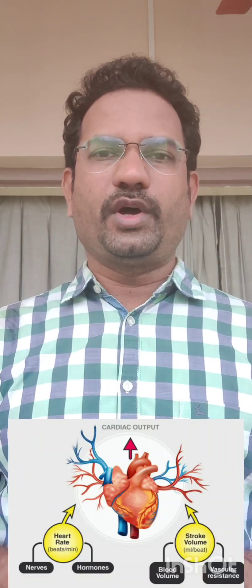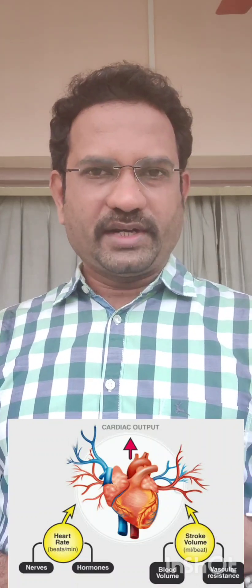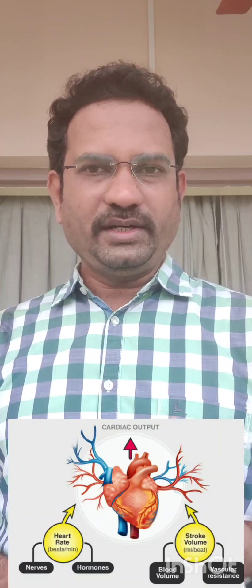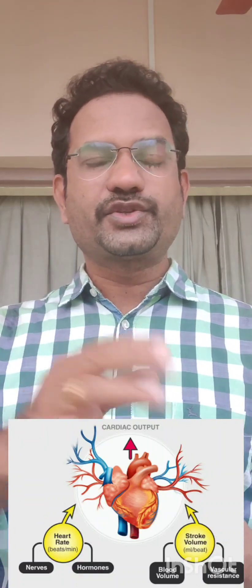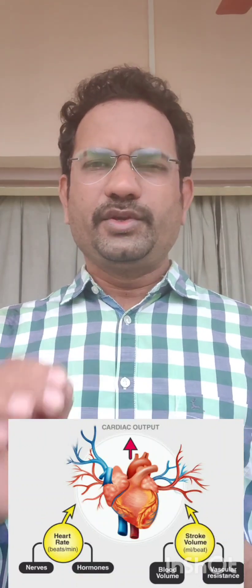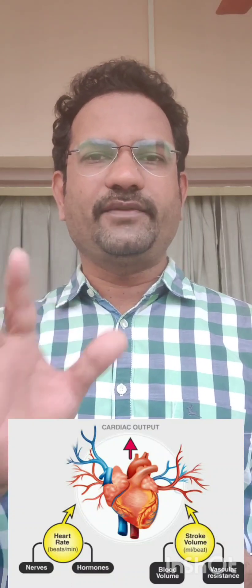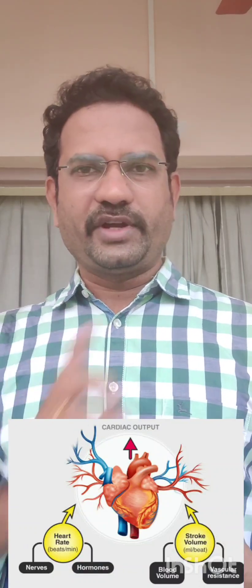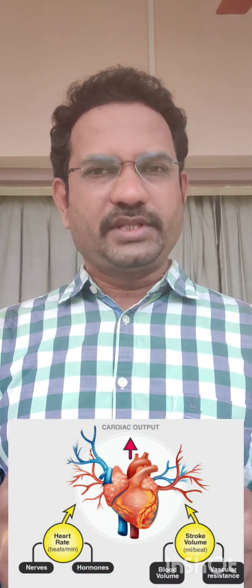Next: stroke volume. Stroke means one contraction. With one contraction, the amount of blood coming out of the heart is known as stroke volume. Usually in a healthy adult male, it is 70 mL — so per one stroke, 70 mL of blood comes out of the heart. This covers the core concepts of heart anatomy and physiology.